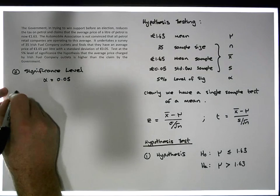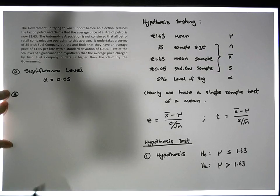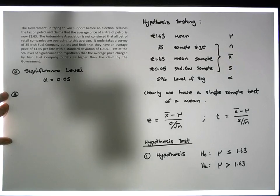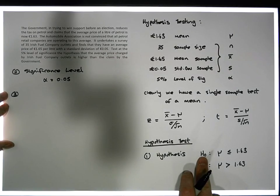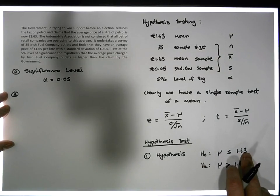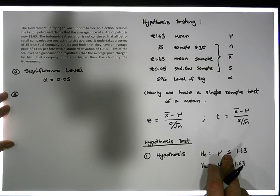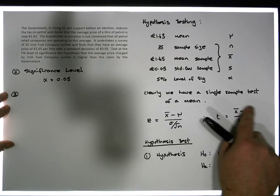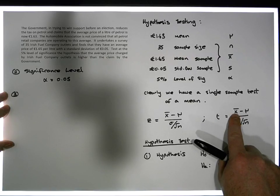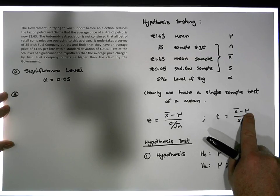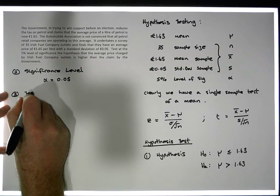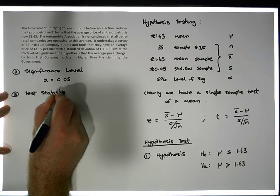Step three is to ascertain how far the sample evidence is away from our hypothesized center of the distribution. The center is the equality part of the null hypothesis — mu equals 163. The test statistic tells us how far the evidence, x-bar, is away from the hypothesized center in standard unit terms.